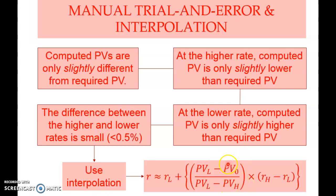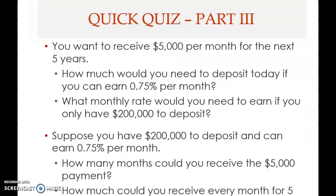The required present value (PV_O) will fall between PV_L (highest) and PV_H (lowest). Note that 'L' refers to the present value obtained using the lower rate, which gives a higher present value. This ratio is multiplied by the higher rate minus the lower rate — the difference in rates. This proportion times the rate difference, added to the lower rate, gives you r.